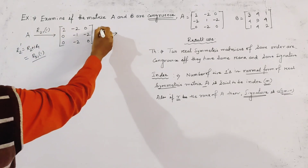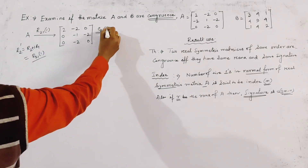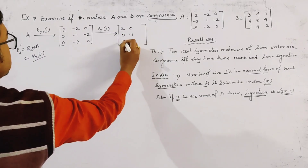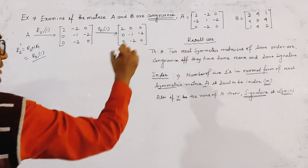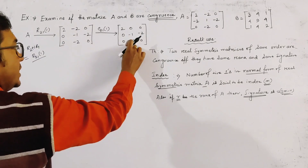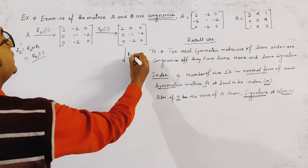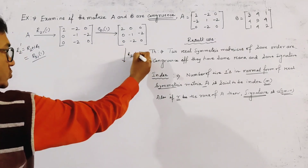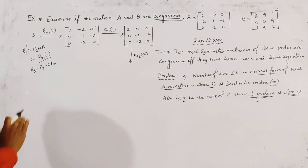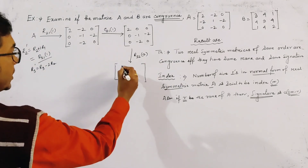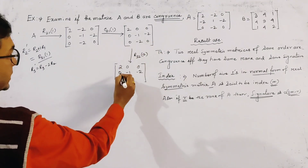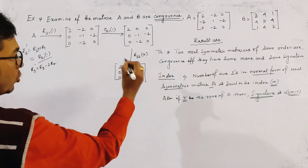Now we apply a column operation to make certain elements zero. We then apply the operation R3 dash equals R3 minus 2R1. After this operation, the matrix becomes: first row [2, 0, 0], second row unchanged, and the third row becomes [0, 0, 4].